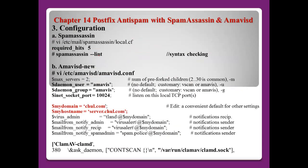For configuration, SpamAssassin normally uses the main configuration file local.cf located at /etc/mail/spamassassin. At first there may be no specific configuration lines. If you open this file you can find the line 'required_hits 5', meaning if an email gets that score it will be marked as spam. To check the SpamAssassin syntax, use: spamassassin --lint.